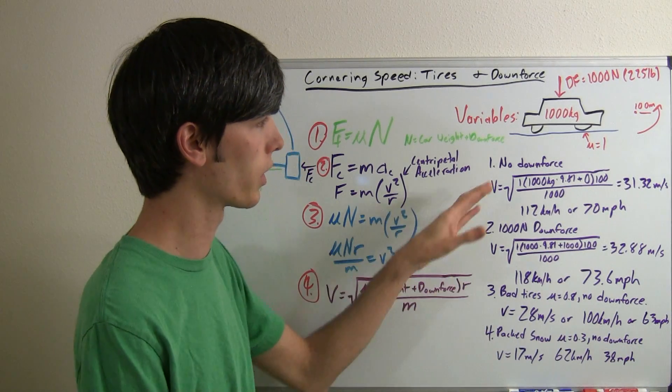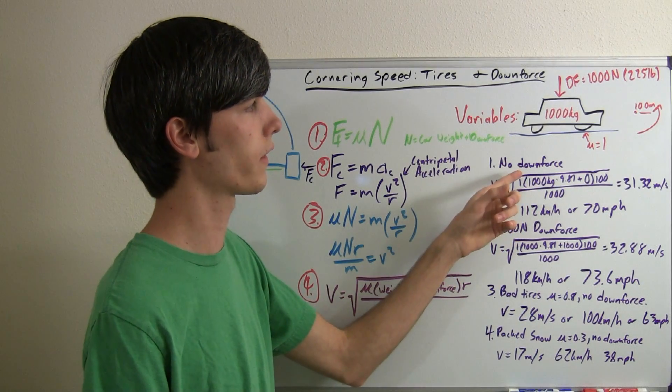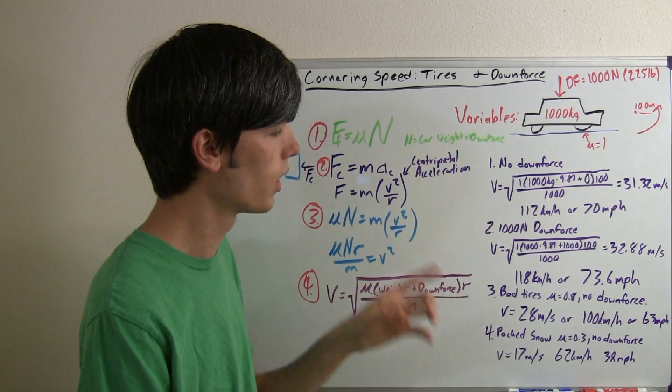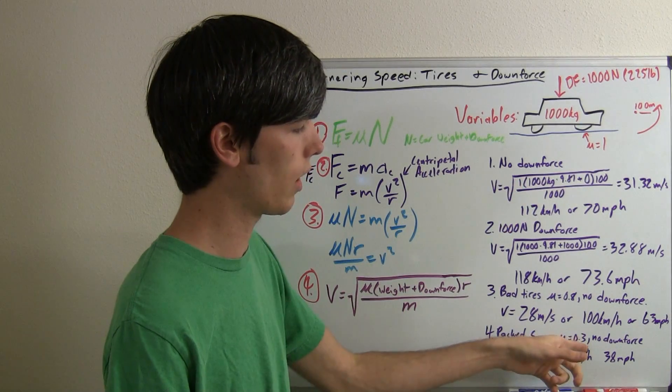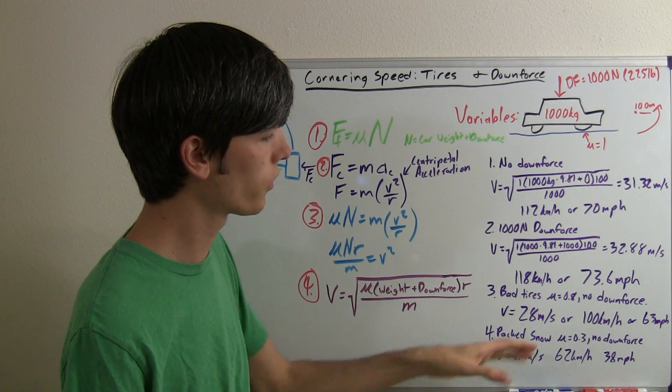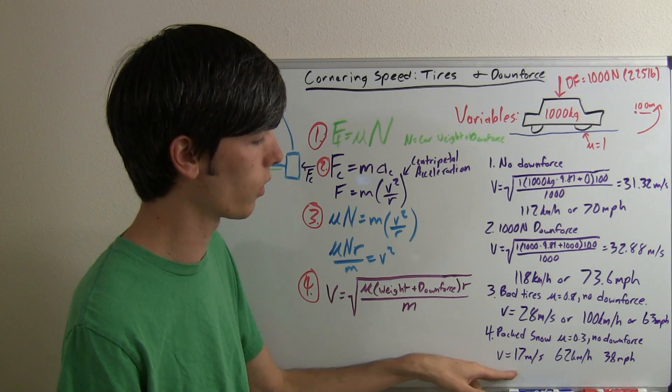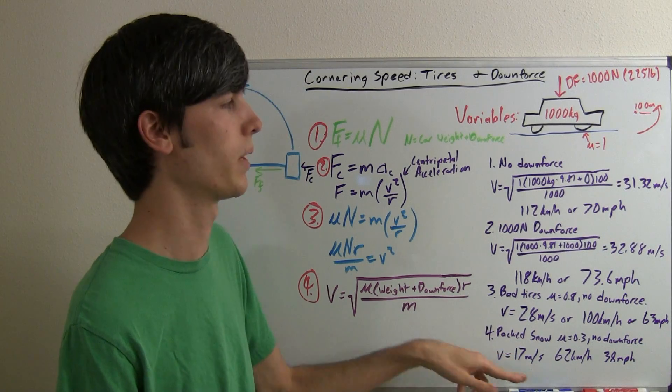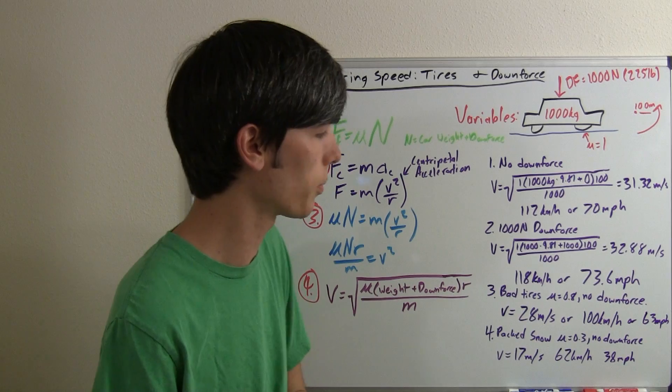We're going to have no downforce. So we're going to go around the same corner, same car, same tires. The only thing that's changing is we're no longer on asphalt, we are on snow. So this number here is going to change from a 1 to our estimated 0.3. So with these estimations and these assumptions, this car can go around that corner at only 17 meters per second, or about 62 kilometers per hour, or 38 miles per hour.